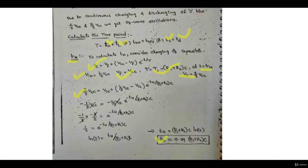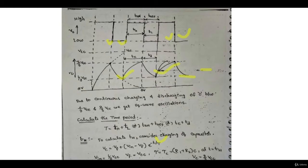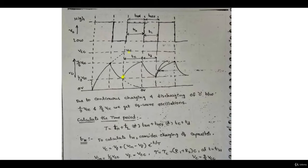Plugging in the values, you get Th = 0.69·(R1 + R2)·C. Note that the first cycle can be neglected because the capacitor starts uncharged and takes one or two pulses to settle between two-thirds Vcc and one-third Vcc. So we take the steady-state case: initially at one-third Vcc, trying to reach Vcc but only reaching two-thirds Vcc. That is how the capacitor equation gives the expression 0.69·(R1 + R2)·C for charging time.